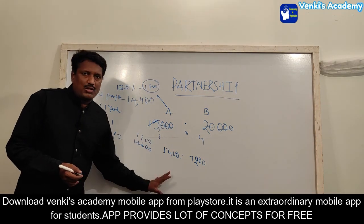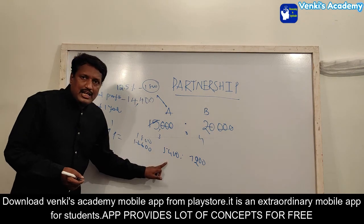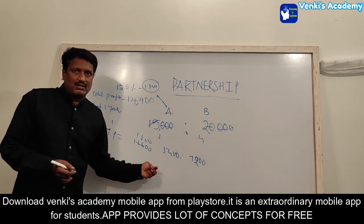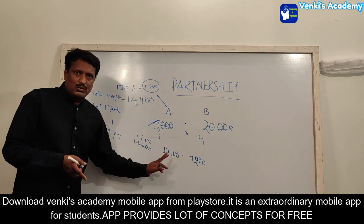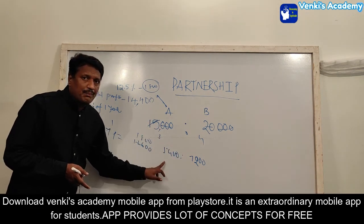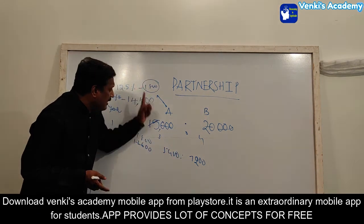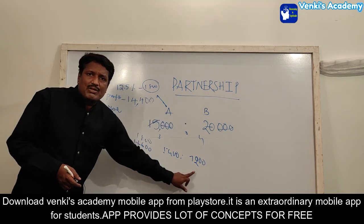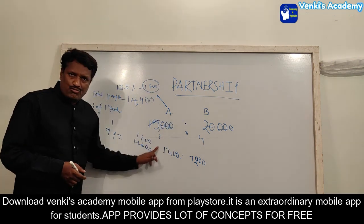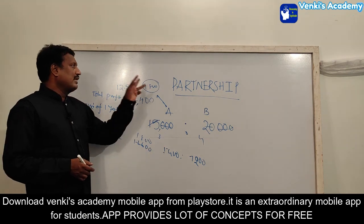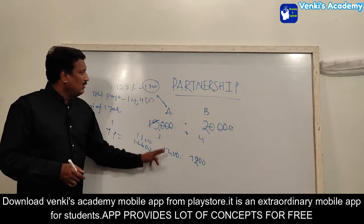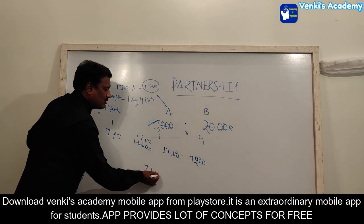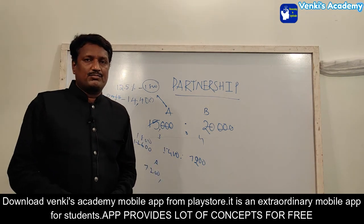A's final share is 1800 (commission) plus 5400 (investment share) = 7,200. B's share is 7,200. So A gets seven thousand two hundred and B also gets seven thousand two hundred. The extra commission of 1800 plus the property share of 5400 gives A a total of 7200.